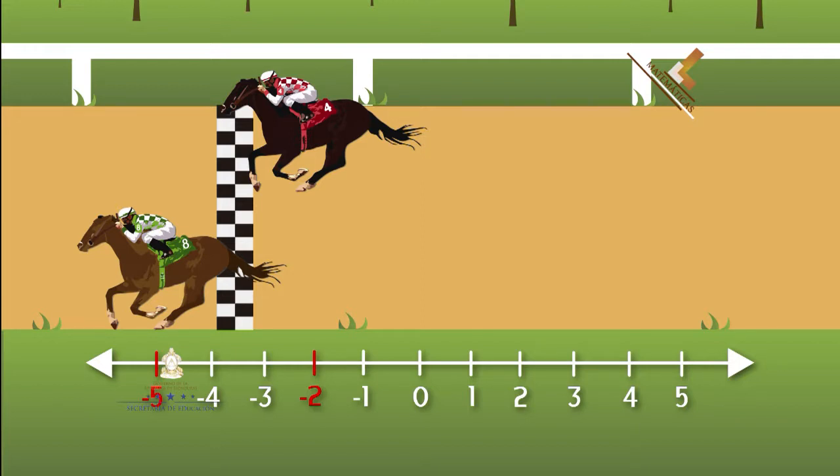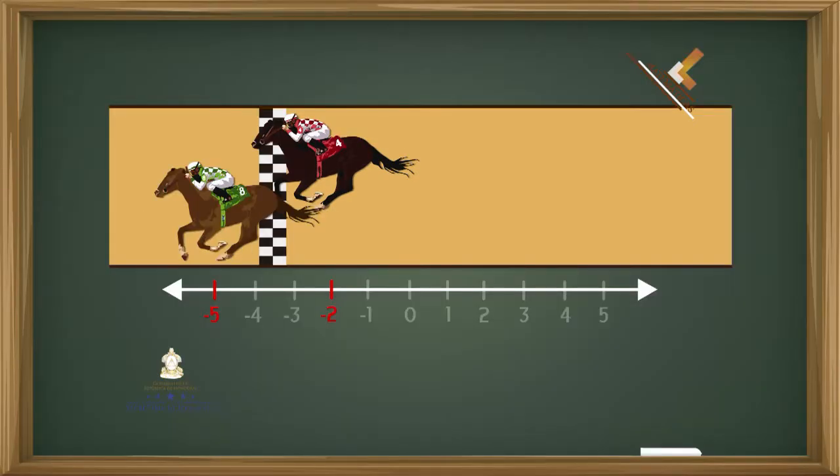La diferencia entre la posición final del caballo capa verde y la posición final del caballo capa roja. La posición final del caballo capa verde es de negativo 5, y la posición final del caballo capa roja es de negativo 2.